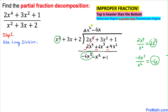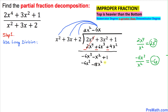We distribute −6x with all the terms in the divisor: −6x times x² gives −6x³, then −18x², then −12x. We change all the signs — negative becomes positive. So the −6x³ terms cancel out, as we can see.